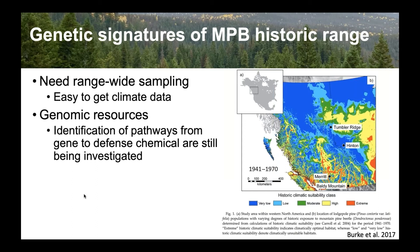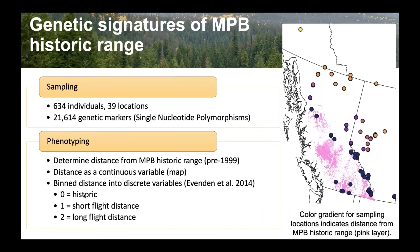We sampled 634 individuals at 39 locations, and being genomic, we sampled over 21,000 markers — also called single nucleotide polymorphisms, or SNPs. That just means there's a single difference in a region between two or more individuals.